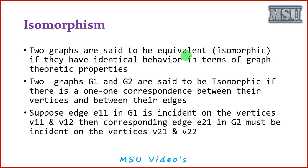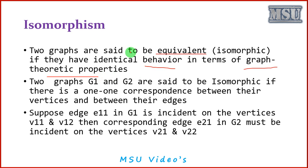Two graphs are equivalent, then we can call those graphs isomorphic. For that equivalency, we are going to discuss some properties. Two graphs are said to be equivalent if they have identical behavior in terms of graph theoretical properties. Both graphs must contain the same kind of properties, then you can say that both graphs are isomorphic.